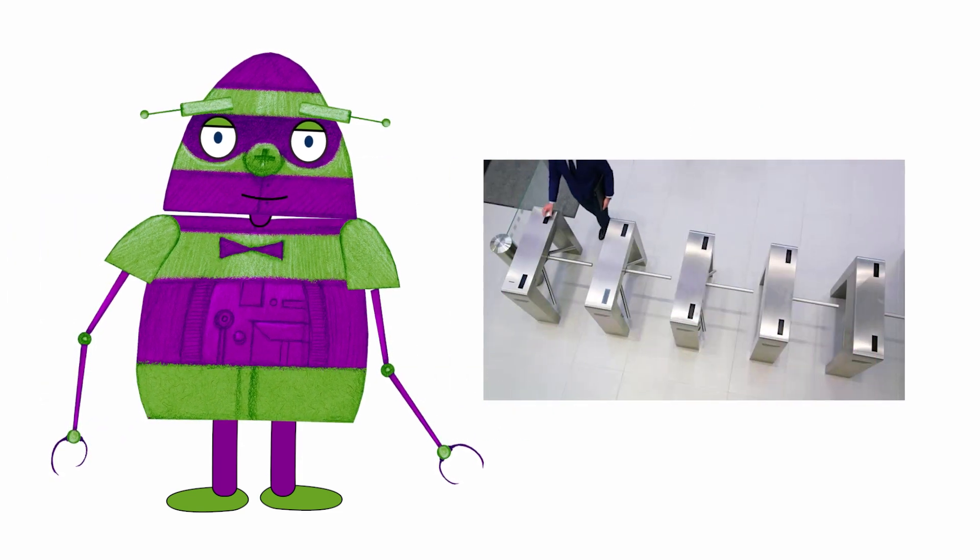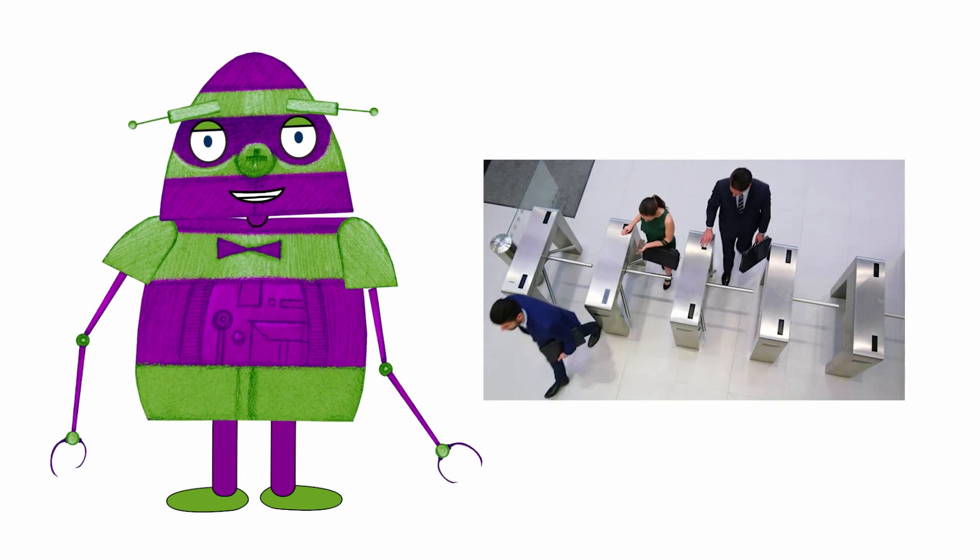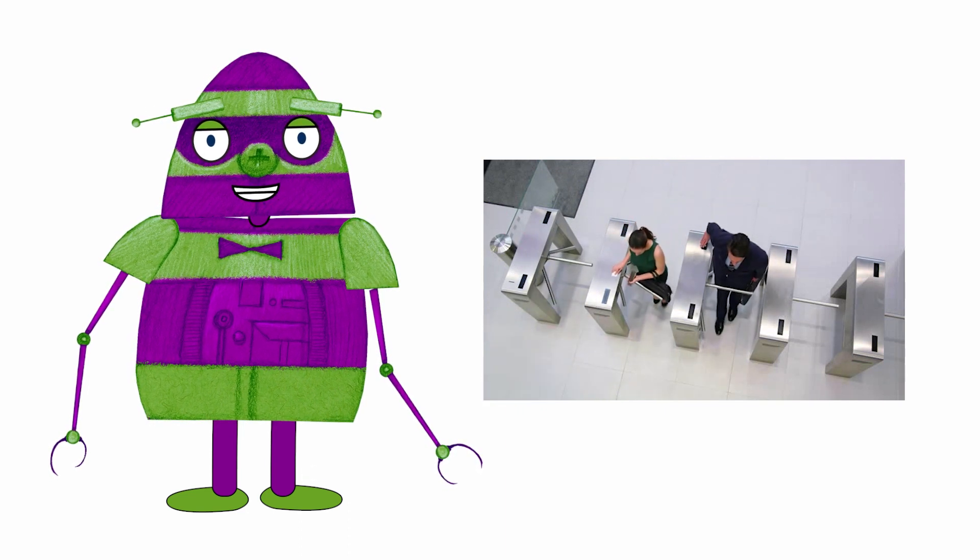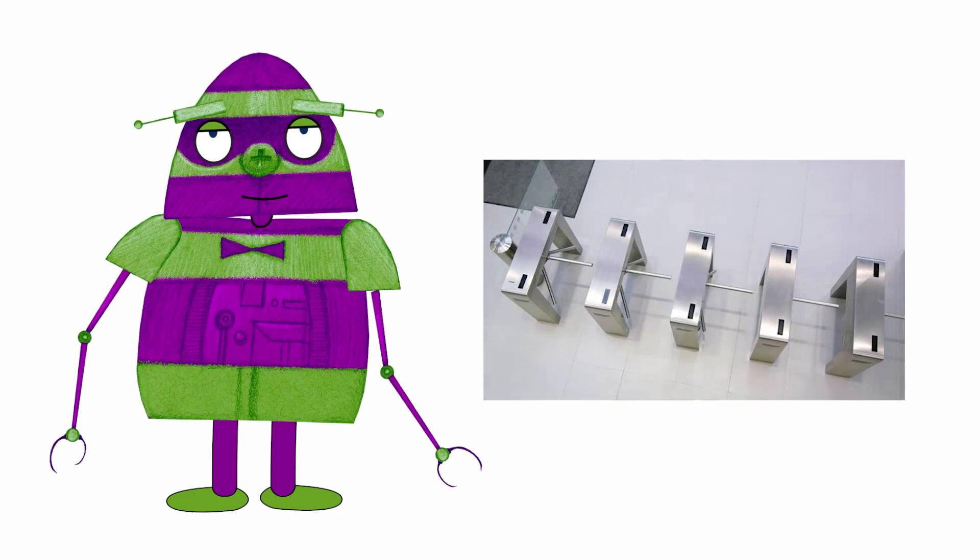As an example, let's look at how a turnstile works. A turnstile is used to control entry, such as at subway stations. How does a turnstile control who may pass through?